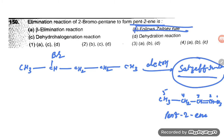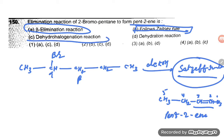This pent-2-ene follows the Zaitsev rule, also known as the Saytzeff rule. Similarly, it is also beta elimination, because this hydrogen — this is alpha, this is the beta hydrogen — is getting eliminated. Also, dehydrohalogenation means hydrogen and halogen both are getting eliminated.